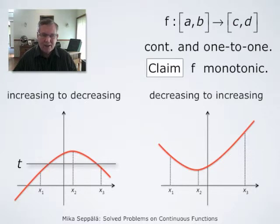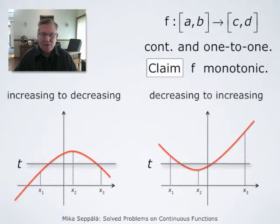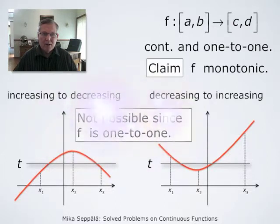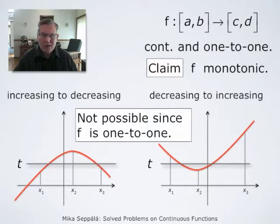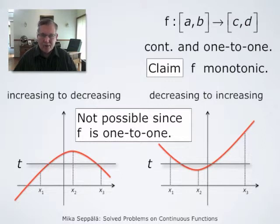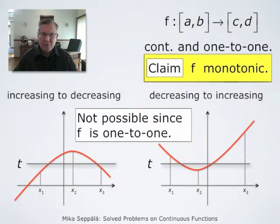Likewise, in the second situation, if t is between f(x2) and the minimum of f(x1) and f(x3), then the horizontal line y = t intersects the graph of f at two points by the intermediate value theorem. But this is not possible since f was assumed to be one-to-one. Therefore, the assumption that f was not monotonic led to a contradiction, and this proves the claim: f must be monotonic.